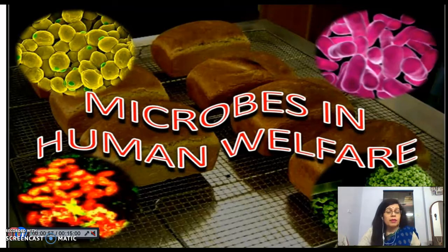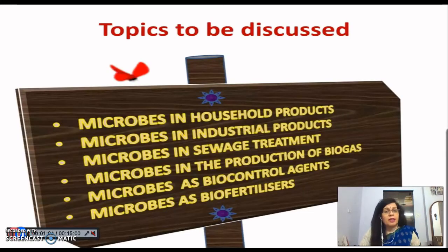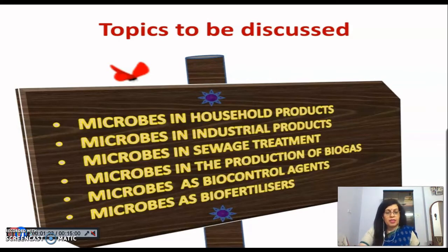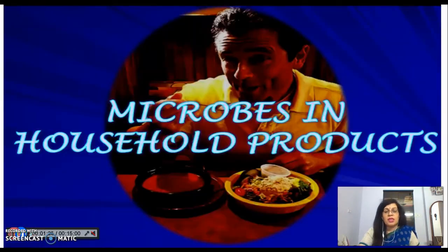We have studied in chapter 8 that there are microorganisms which cause different kinds of diseases. But within this chapter, we are going to be a little different — how they are useful for human welfare. We will discuss subtopics like household products, industrial products, sewage treatment, production of biogas, biocontrol agents and biofertilizers, and how they are being used in these different fields.